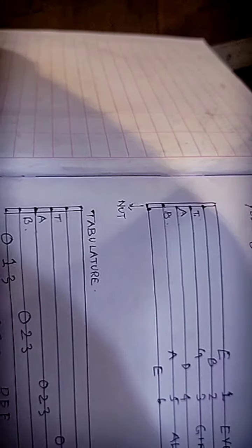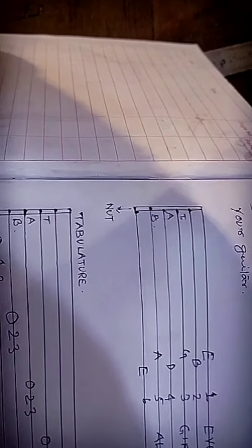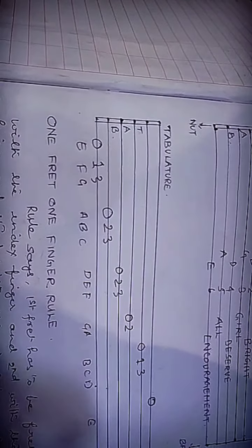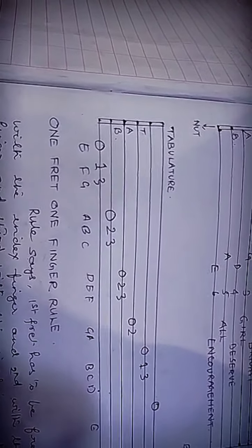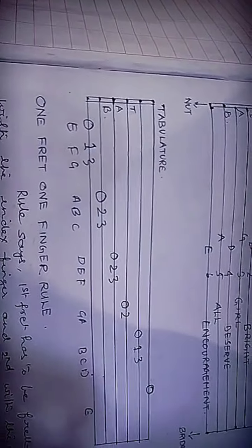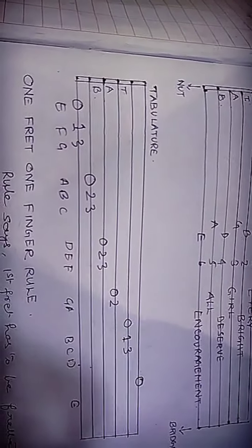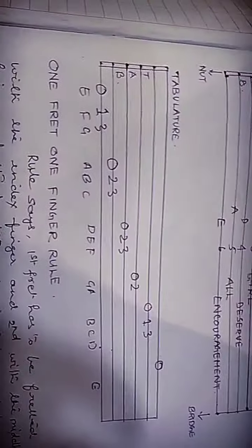The scale of E has 7 notes — E, F, G, A, B, C, D — and it is played in 2 octaves. So you have E, F, G, A, B, C, D, E, F, G, A, B, C, D, E. Hope you got this. This will be discussed in length as we proceed to our classes.